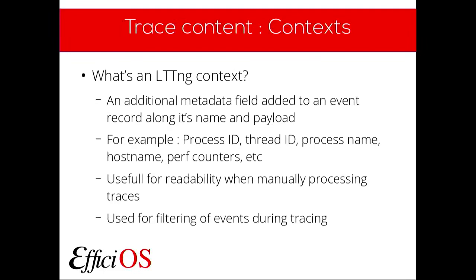The first specific feature is context. An LTTNG context is a metadata field you add to a trace event. The contexts we currently have are like process ID, thread ID, and process name — you enable those contexts on your tracing session and each event is tagged with the proper information. It's useful for manually reading traces, but also very useful for filtering. For example, to only get syscalls from a specific PID, you add the PID context and then add a filter to only read events from that PID.